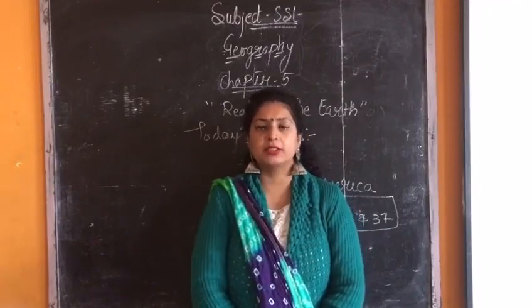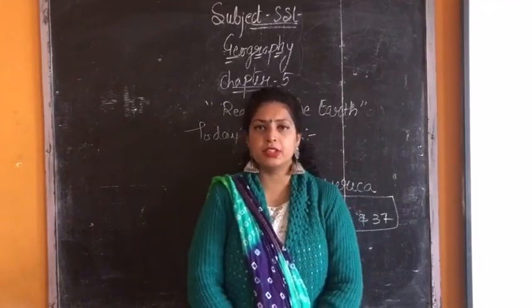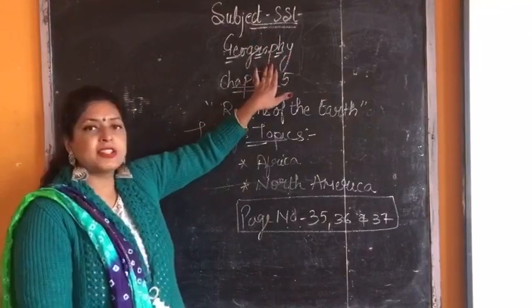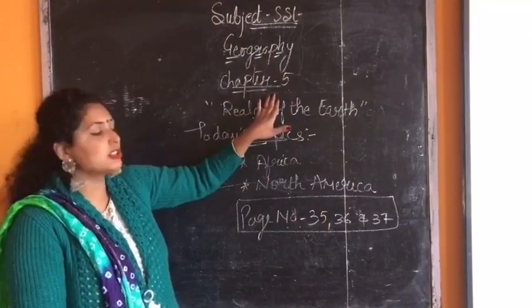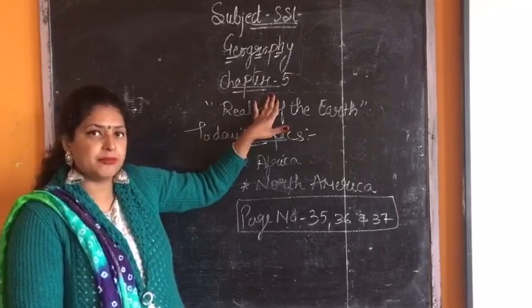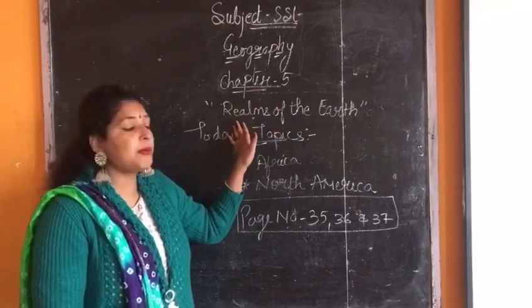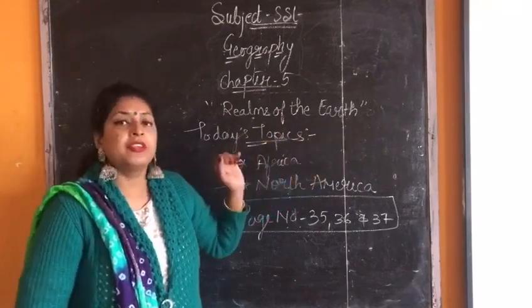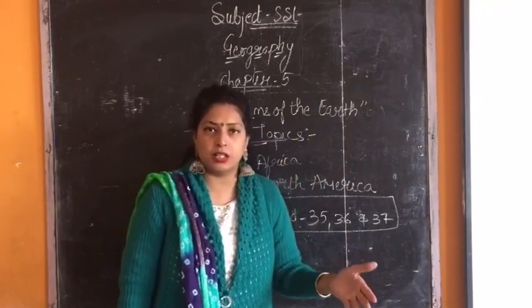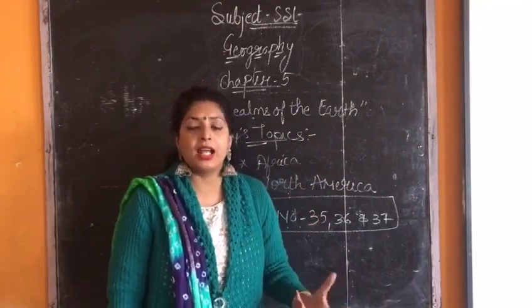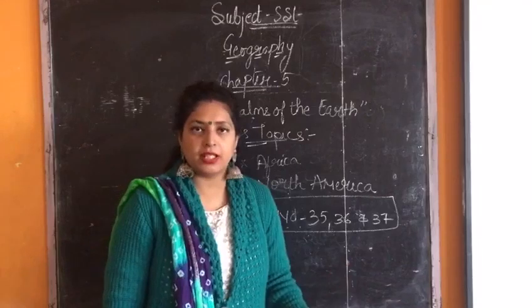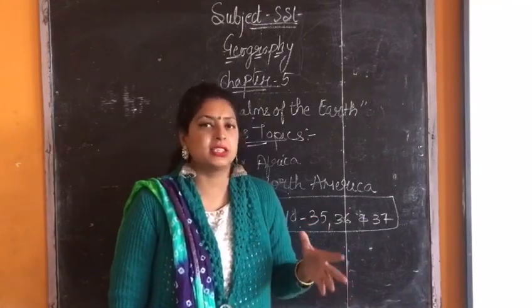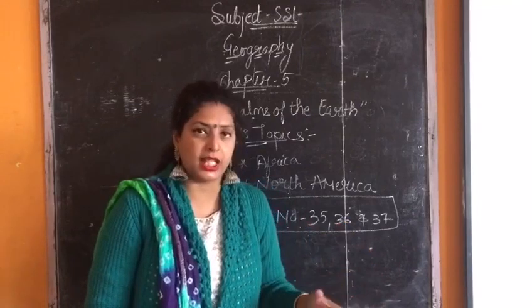We are going to start today's SST class. For this first year on board, your subject is SST and the part of SST we are doing is geography. In chapter 5 we have already started in the previous class and the name of the chapter is 'Reliefs of the Earth.' We have covered what is the reliefs of the earth and land masses. There are seven continents and one of the seven continents we have discussed in our last class and that is Asia.